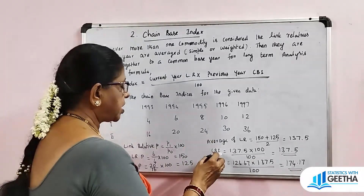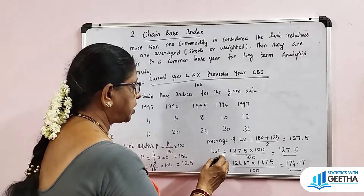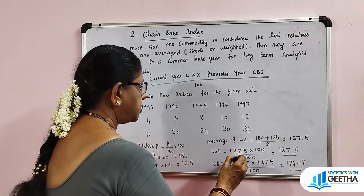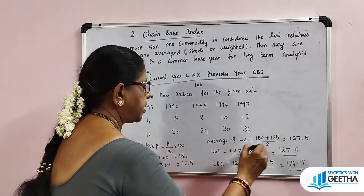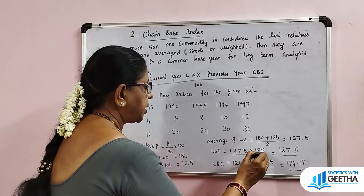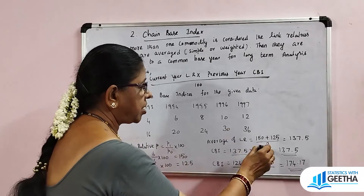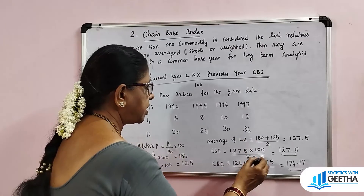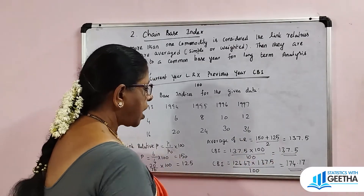Now we have the average link relatives. For the corresponding chain-based index, we apply: current average link relative into previous year chain index divided by 100. The first year chain-based index is 100. Then 137.5 into 100 divided by 100 gives 137.5. So the chain-based index is 157.5 for the next year.